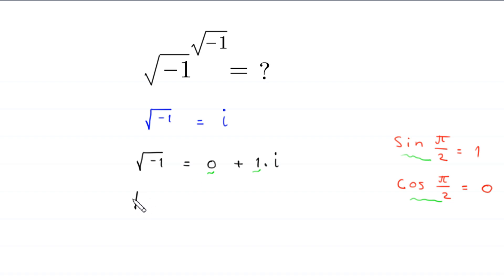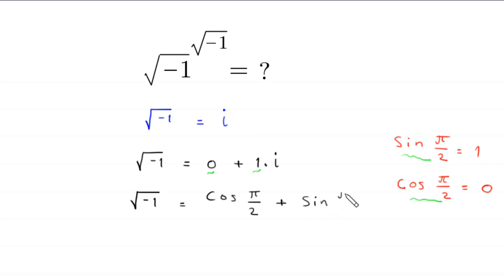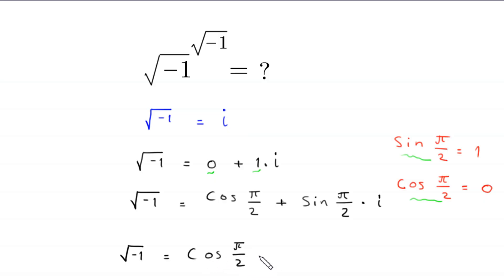So this will become: root negative 1 is equal to — in place of 0 we write cos of pi over 2, plus — in place of 1 we write sin of pi over 2, times i. We can rewrite this expression as root negative 1 equals cos of pi over 2 plus i times sin of pi over 2.